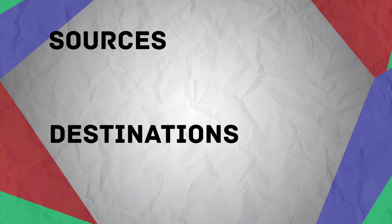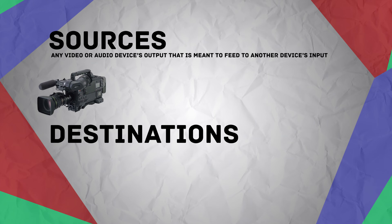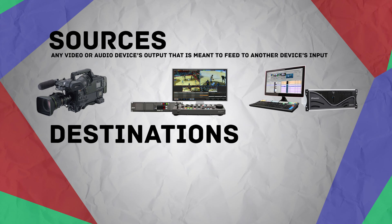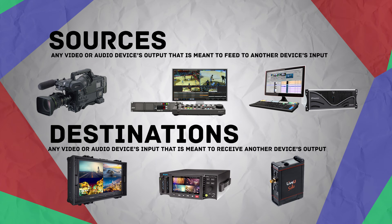Let's start with sources and destinations, as we need to have a clear understanding of these before we can start talking about routers. A source is going to be any video or audio device's output that is meant to feed another device's input. Examples of this would be cameras, video server channels, and character generators. A destination is going to be any video or audio device's input that is meant to receive another device's output. Examples of this could be monitors, capturing devices, and transmission devices.